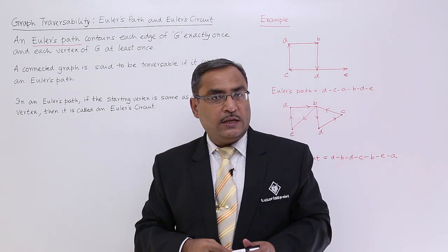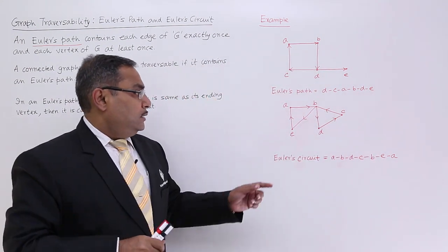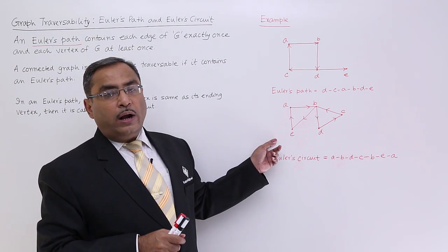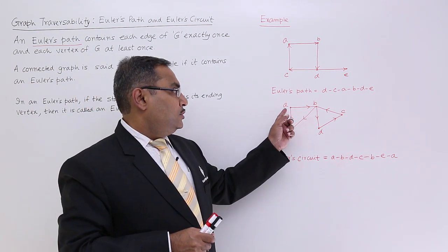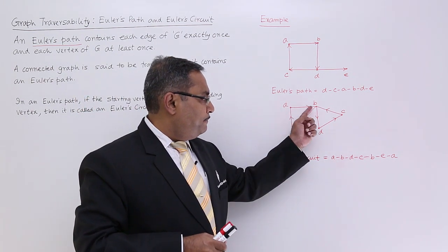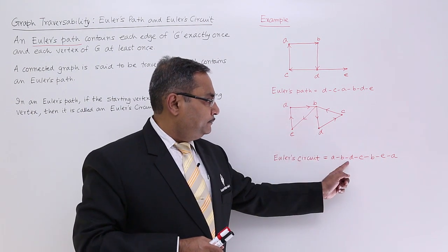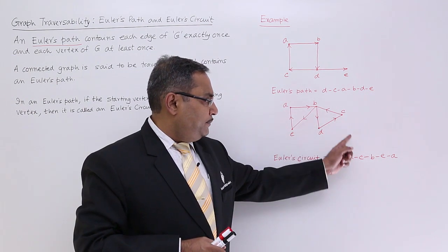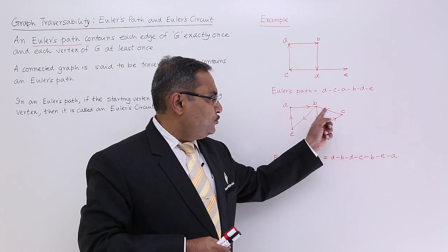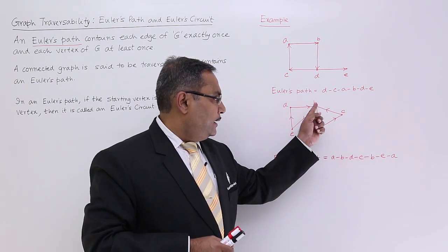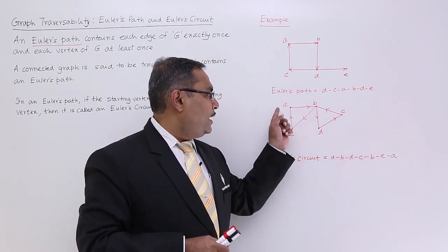Consider this one. Let us find out one Euler's circuit. We are going for A to B, then B to D, then D to C, then C to B, then B to E, and then E to A.